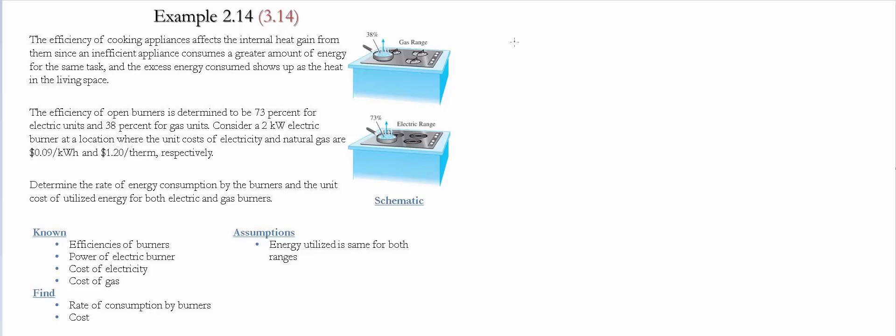The first step in this problem is to identify the amount of energy utilized. The energy utilized is going to be the energy input times the efficiency. Notice that the only quantity we have for the energy input is for the electrical range, which gives us 2 kW and the efficiency. So we simply take 2 kW times the efficiency, which gives us 1.46 kW. Notice that we use 2 kW because it's the input that was provided by the problem.